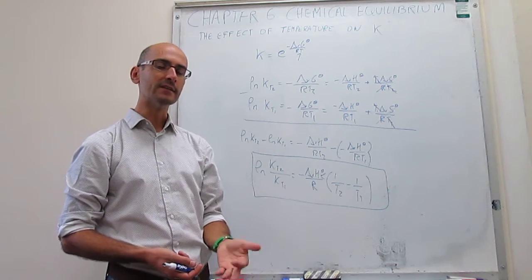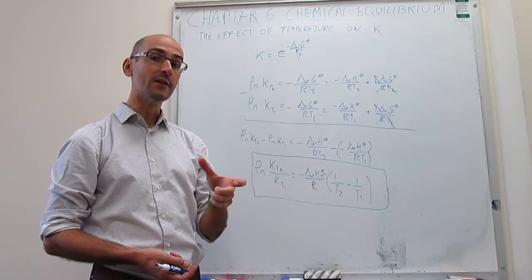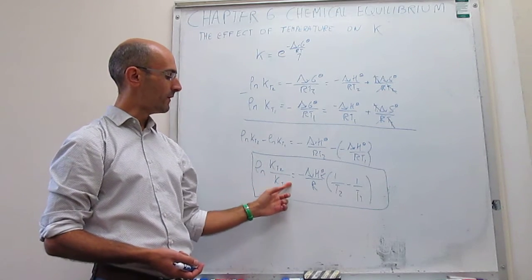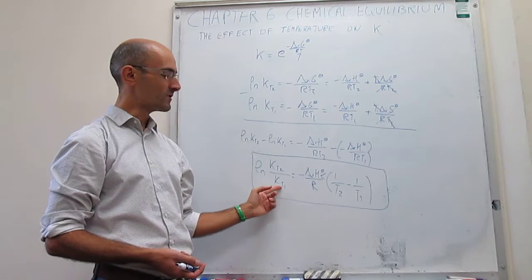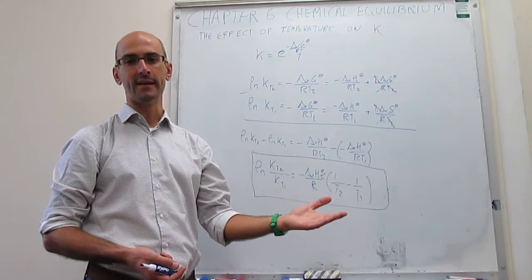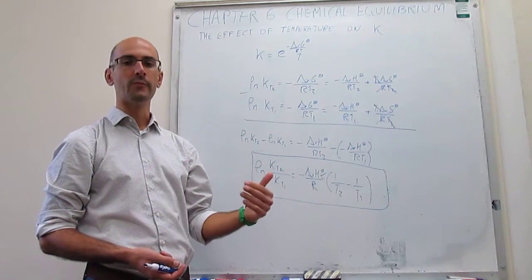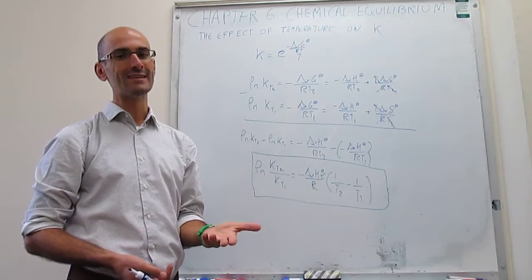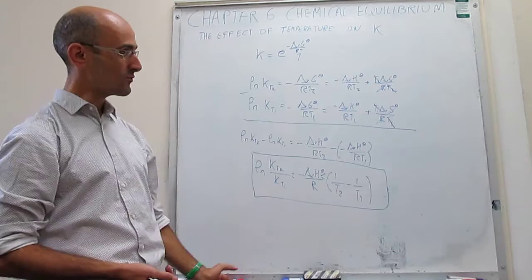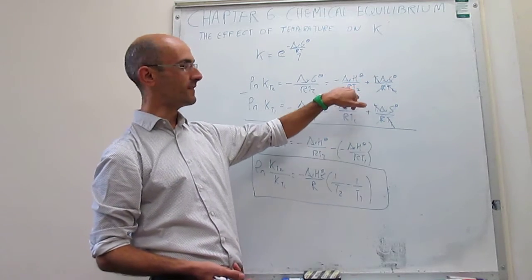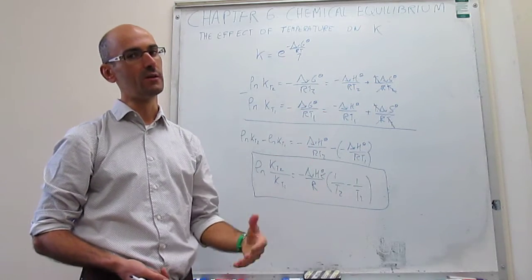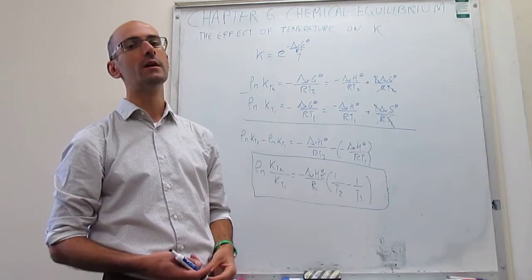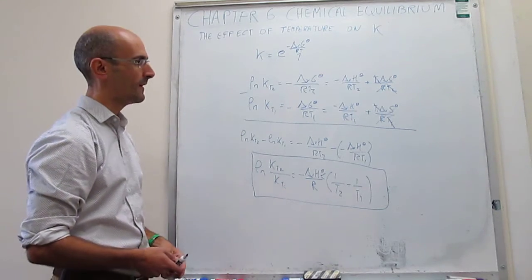The approximation is valid, however, if the change in temperature is not very large. For example, if you're interested in how the equilibrium constant changes from 298 Kelvin (room temperature) to 310 Kelvin (physiological temperature), that change is only 12 degrees. The actual changes to the enthalpy and entropy of the reaction will be very small, even negligible. So the approximation is quite sound when temperature changes are small.